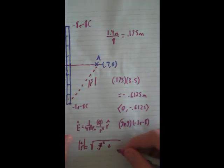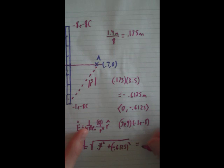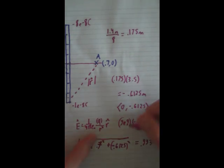So, let's see, 0.6125, I guess this is negative, won't really matter because we're squaring it. So that'll end up equaling 0.933. So, this will be on the bottom, sorry, 0.933 squared, times r hat.